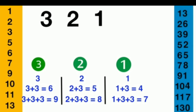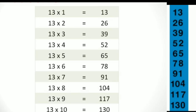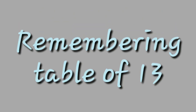Let us compare it with the table of 13 — yes, it matches: 13 ones are 13, 13 twos are 26, 13 threes are 39, 13 fours are 52, 13 fives are 65, 13 sixes are 78, 13 sevens are 91, 13 eights are 104, 13 nines are 117, and 13 tens are 130. This trick is applicable whenever you want to write the complete table of 13. However, if there is a dodging table case, you have to follow different steps for remembering the table of 13.